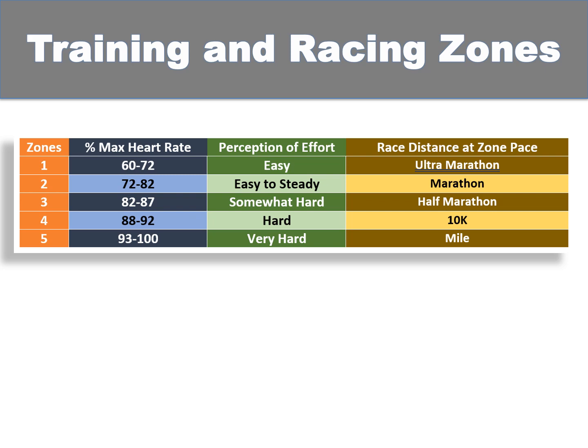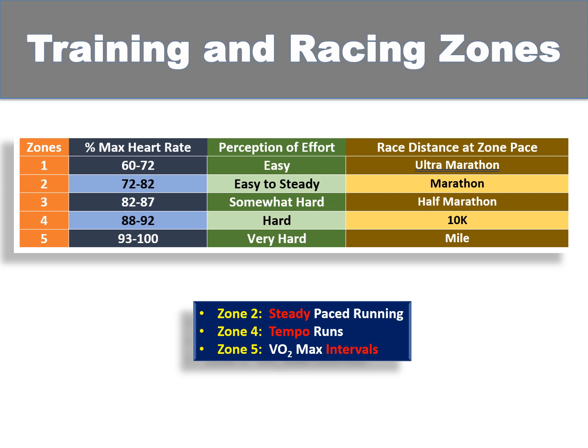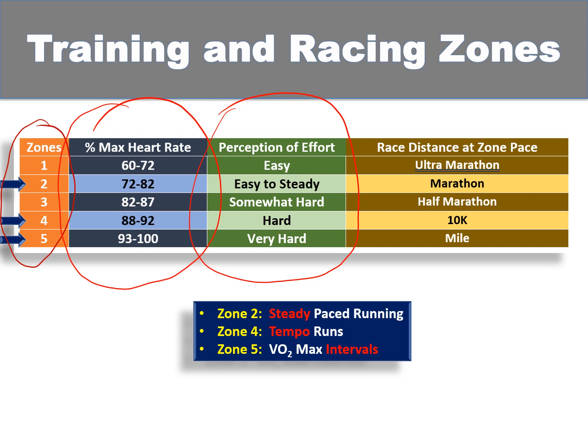I want to start our discussion with an understanding of training and racing zones. These are training zones from the Norwegian Olympic Federation. I like these particular training zones and use them a lot with athletes. Just about any training zone system will work, but this is a well thought-out, simple system that works particularly well. In this system there are five zones — zones one through five. We use a couple of ways to determine whether we're training in that zone: one is as a percentage of max heart rate, and the other is perception of effort.